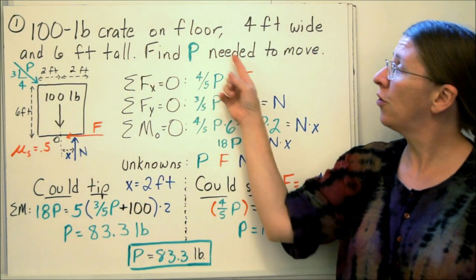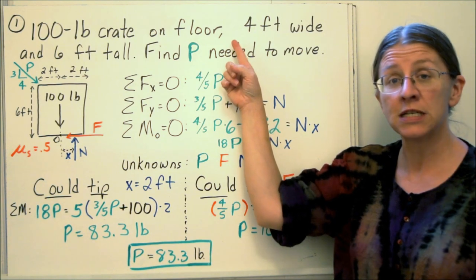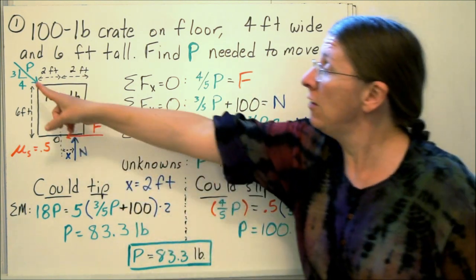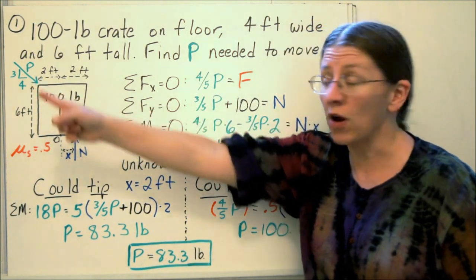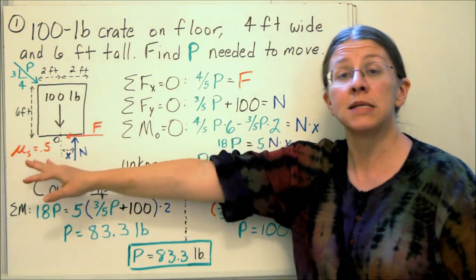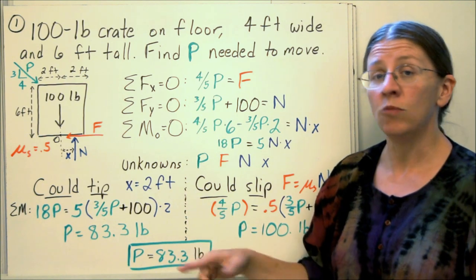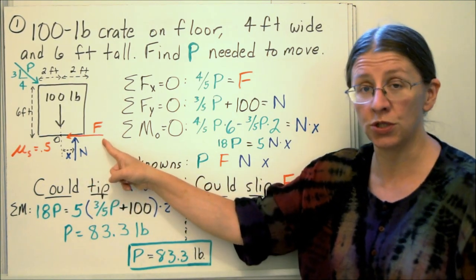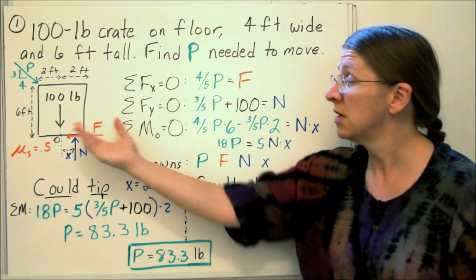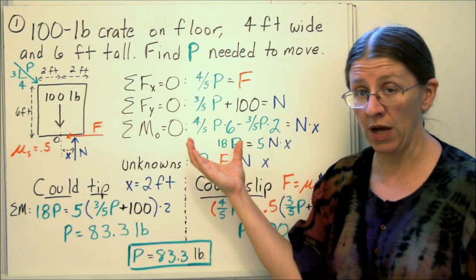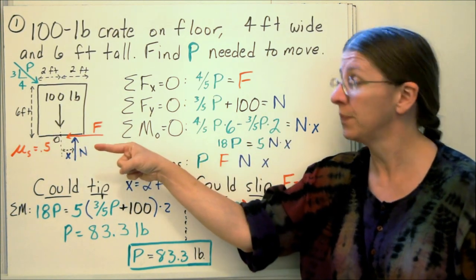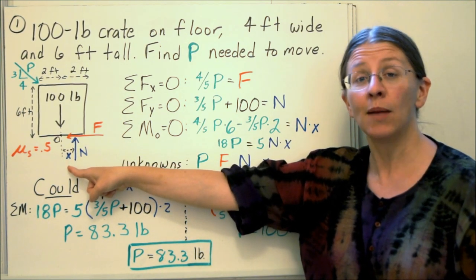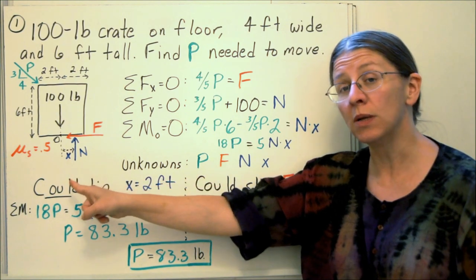Let's look at a couple examples. The first one is a 100-pound crate on the floor, just a flat surface. It's 4 feet wide and 6 feet tall. I want to find out what p-value I need here at a 3-4-5 triangle to move this, where μs is 0.5. That's my free body diagram with distances and everything. I'm going to put f opposing motion. So if there were no friction on this surface, this crate would move this way. So friction points that way. The normal force I put at some distance x here. I don't know where it is exactly. I'm going to let my equations of equilibrium tell me.